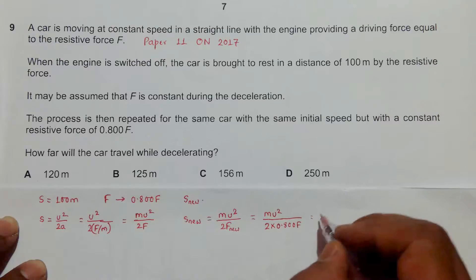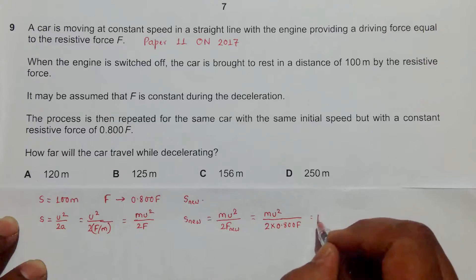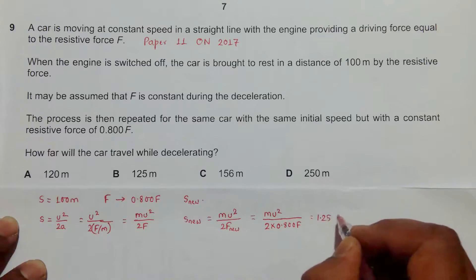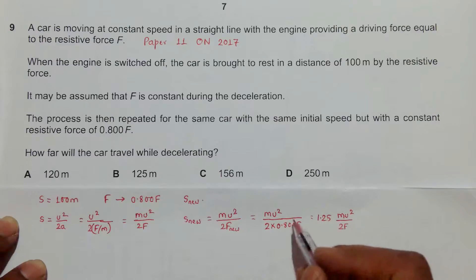Mathematically it becomes 1.25 m u squared by twice F. So one divided by 0.800 becomes 1.25.